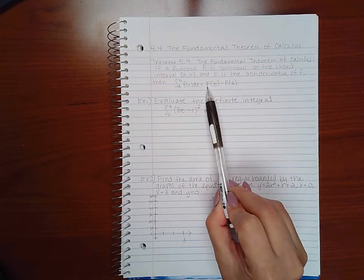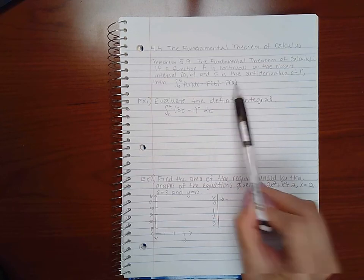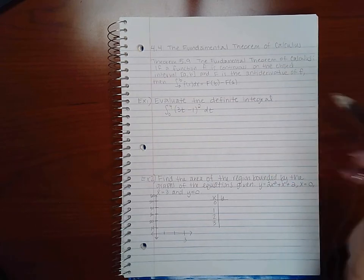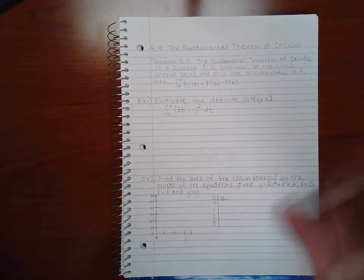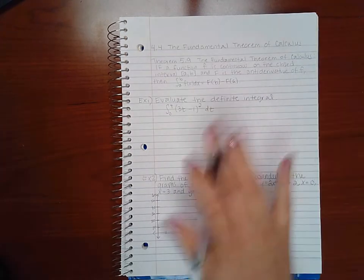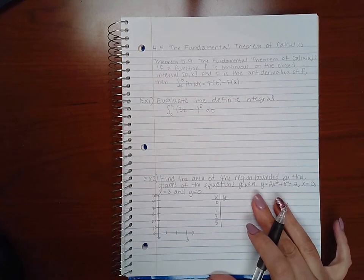It's the antiderivative evaluated at b minus the antiderivative evaluated at a. So you do have to actually integrate it first and then plug in the bounds, plugging in the upper bound first and then the lower bound. So now we actually have a way to calculate the definite integral.